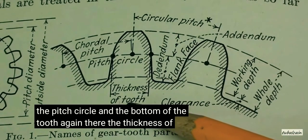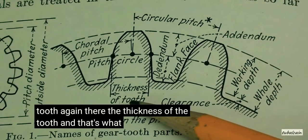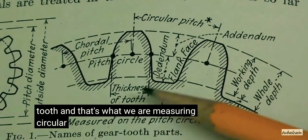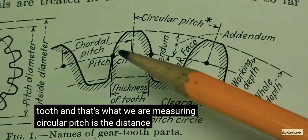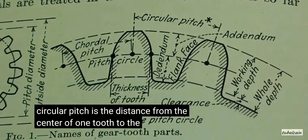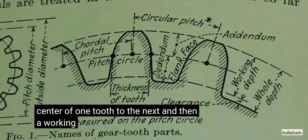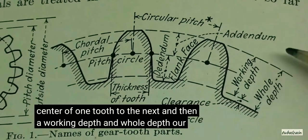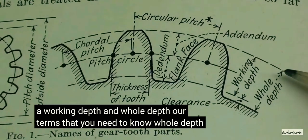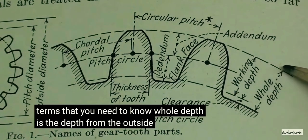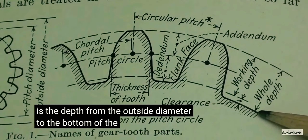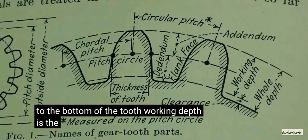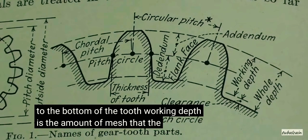Again, there's the thickness of the tooth, and that's what we are measuring. Circular pitch is the distance from the center of one tooth to the next. And then a working depth and hole depth are terms that you need to know. Hole depth is the depth from the outside diameter to the bottom of the tooth. Working depth is the amount of mesh that the teeth have.